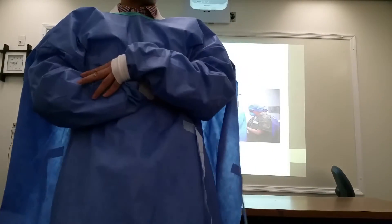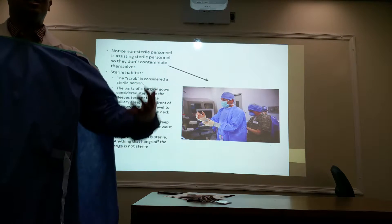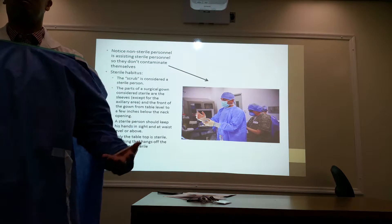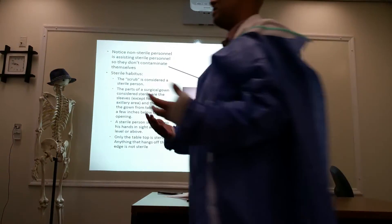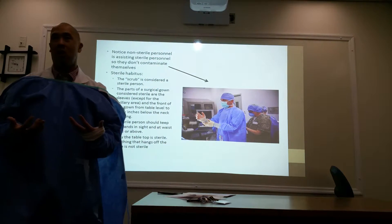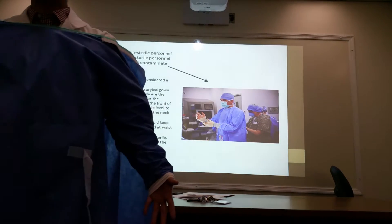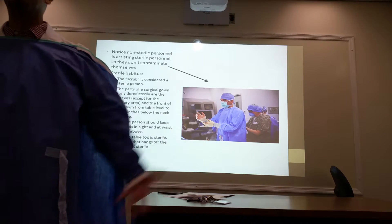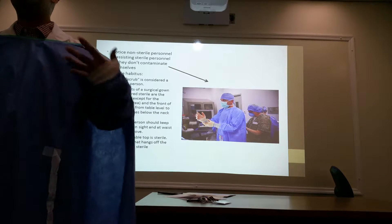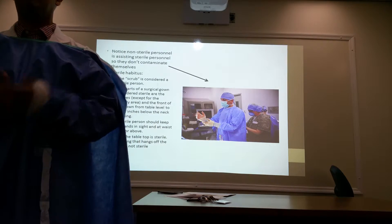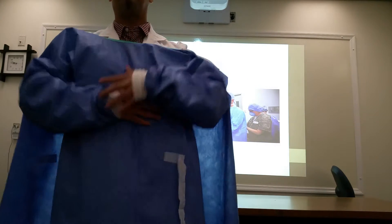You always see their hands above their waist. Anything below the waistline is not considered sterile. It doesn't matter how tall you are — if you're four feet tall or six-foot-seven, if your hands are below your waist, it's not sterile. It is a standard practice: anything below your waist is not sterile, so your arms are always kept above your waist, but not in your armpits.